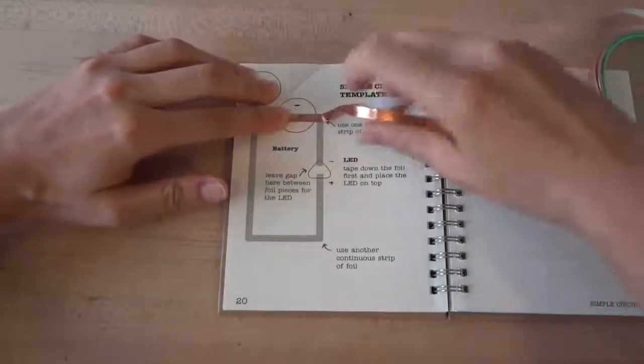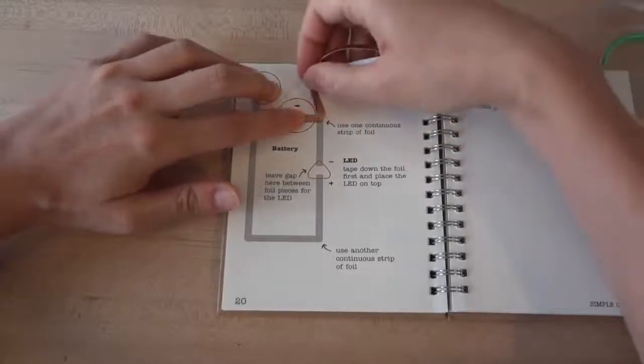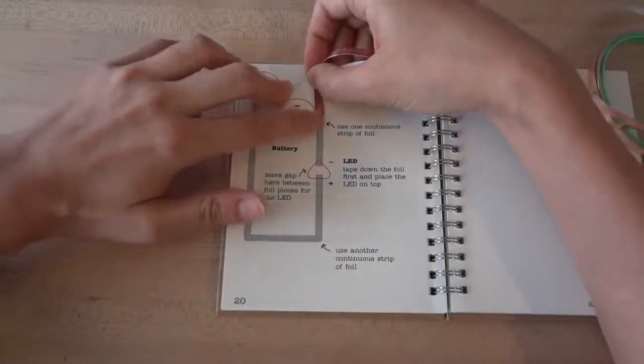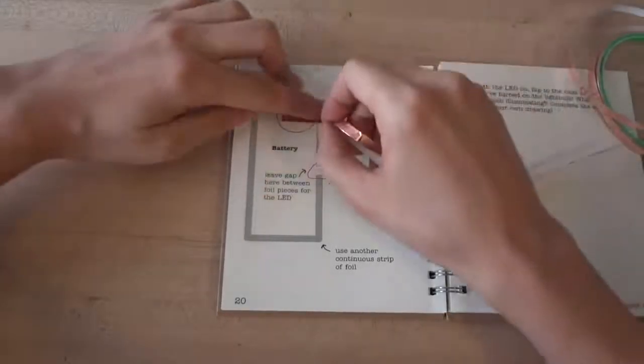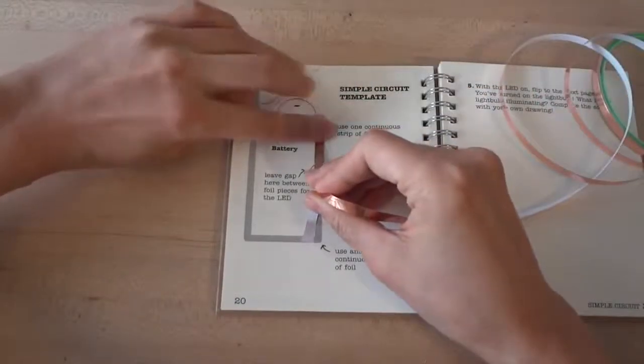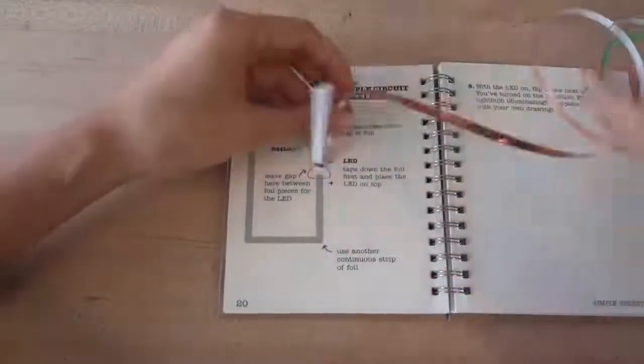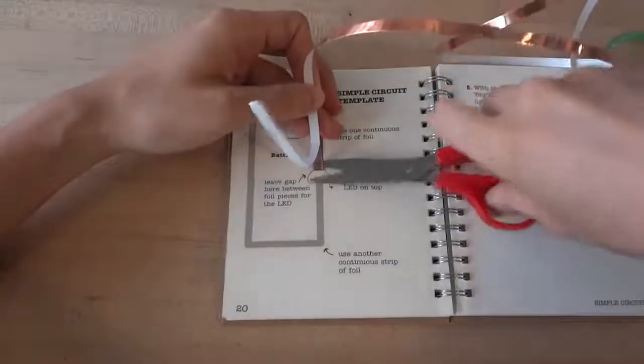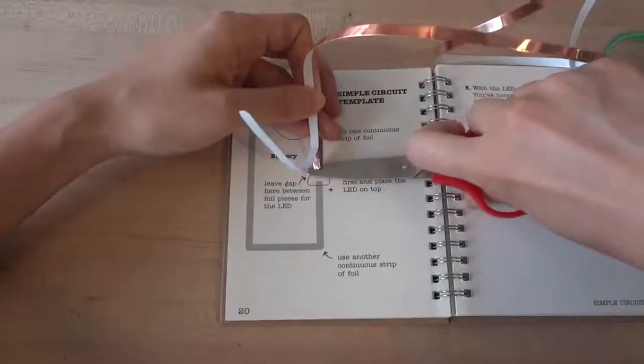To make your tape turn corners, fold your tape up away from the direction you want to go, so that the sticky side is up, and then fold it back down in the direction that you want to turn. This gives you a nice, clean, flat corner. To cut the tape, you can either use scissors or just tear with your hands.